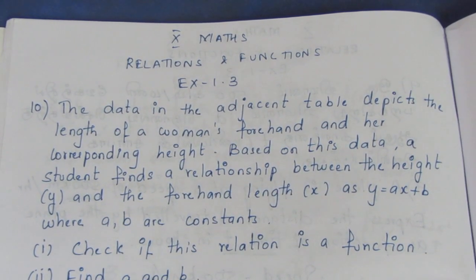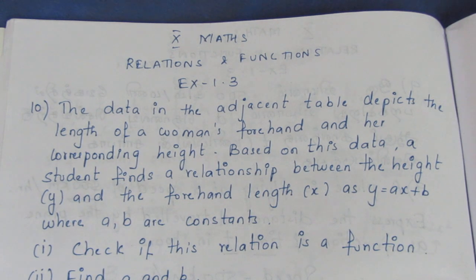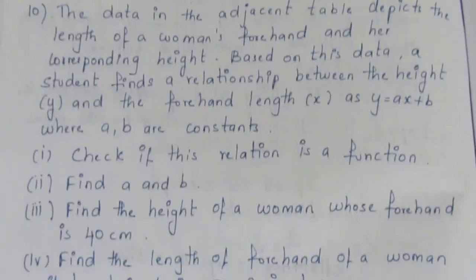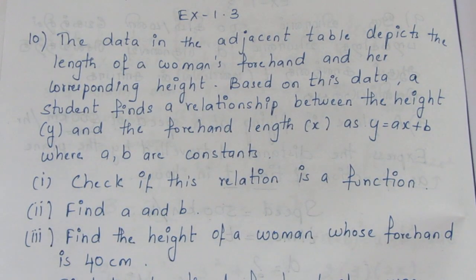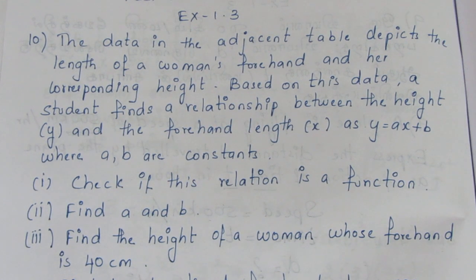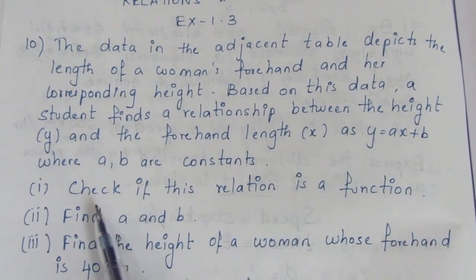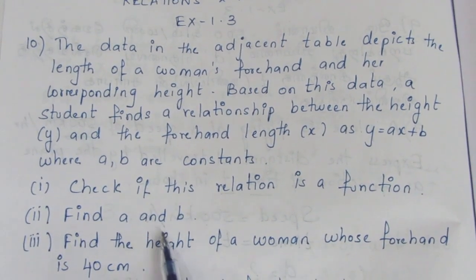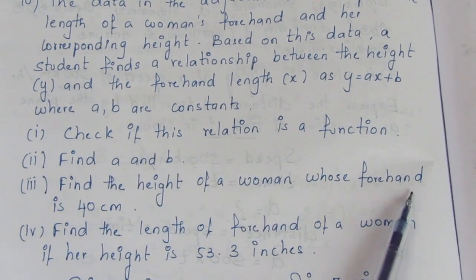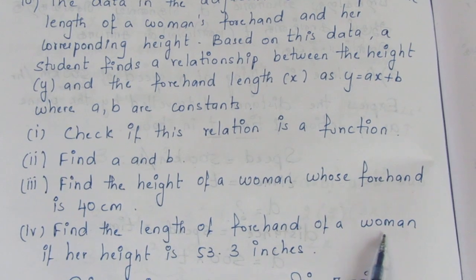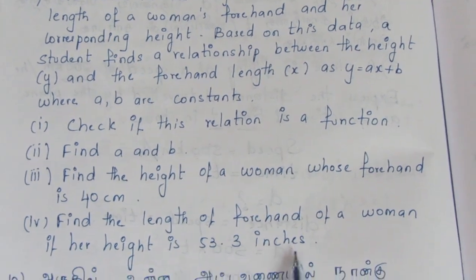Hello viewers. I am Idli. In the 10th Maths Relations and Functions Exercise 1.3, 10th sum video question: the data in the adjacent table depicts the length of a woman's forearm and her corresponding height. Based on this data, a student finds a relationship between the height y and the forearm x as y equals ax plus b, where a and b are constants. Find the height of a woman whose forearm is 40, and find the length of the forearm of a woman whose height is 53.3 inches.